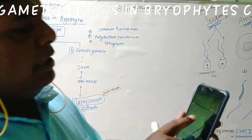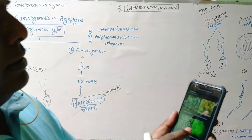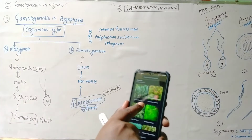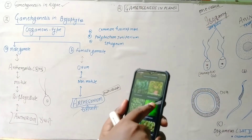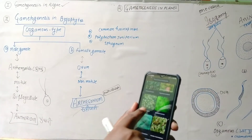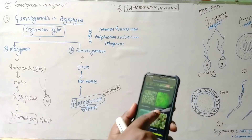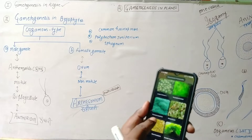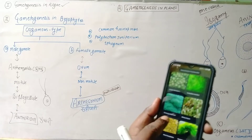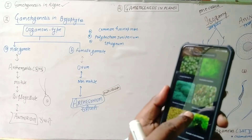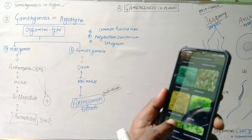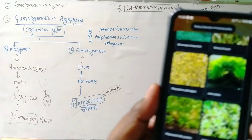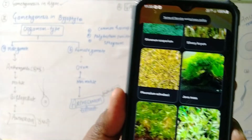Bryophytes — here you can watch some figures of the Bryophytes. This is called Kamal liverworts, Polytrichum, Juniperus hair cap moss, Polytrichum phylum. This is Dicranum scoparium, Silvery Bryum, and so many plants of Bryophytes.